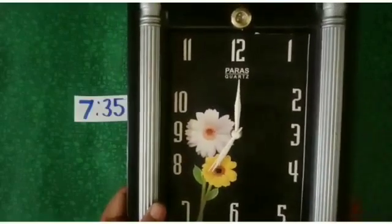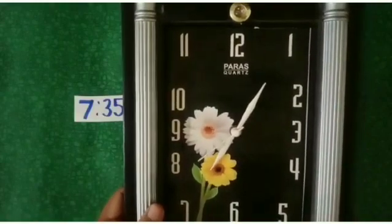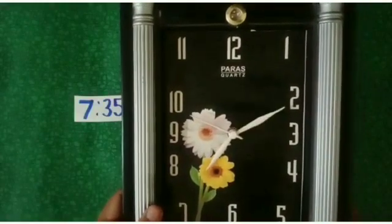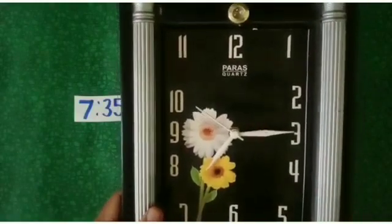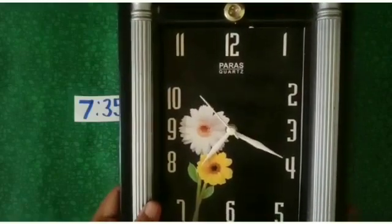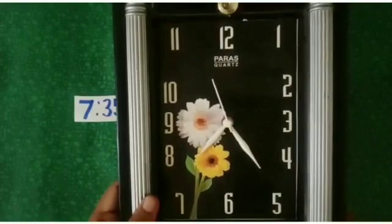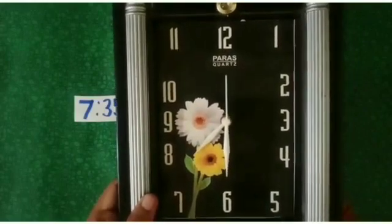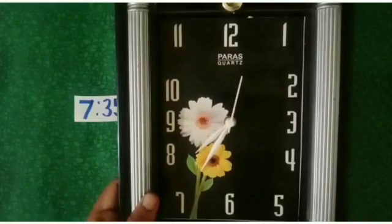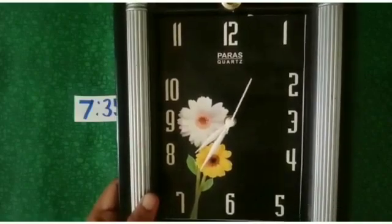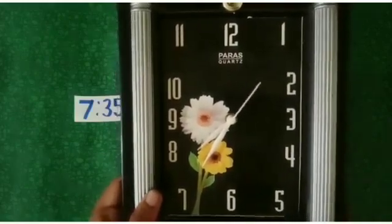Let us see. From 12 to 1, 5 minutes, 10, 15 minutes, 7:20, 25 minutes, 30 minutes, and 35 minutes. So students, what is the time in this clock? 7:35. I hope the concept is clear to you.